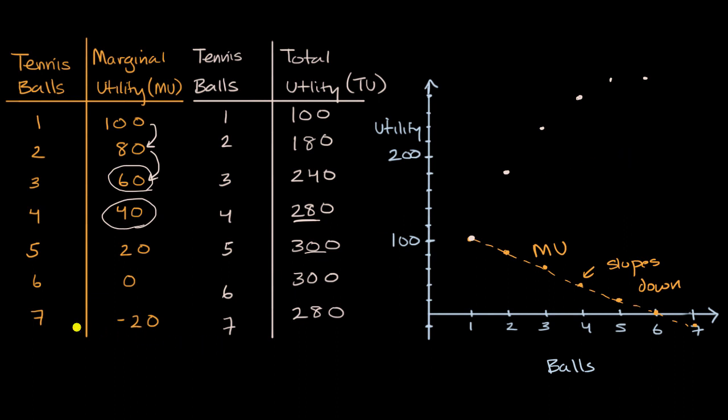And now the seventh ball, I'm tired of these tennis balls. I'm being overwhelmed by them. I'm finding it stressful. And so it actually has a negative marginal utility. And so my total utility, if someone forced me to have seven balls, my total utility would now go down by 20. And so my total utility now would be 280, right over here.